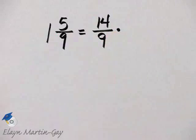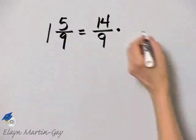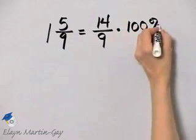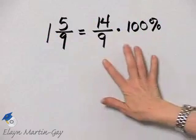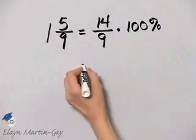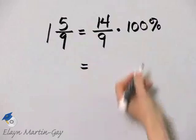But now I will multiply by 1 in the form of 100 percent. And now I do have it written as a percent. We need to clean up this multiplication and simplify, but that's about it.